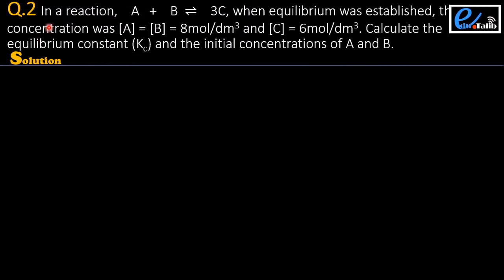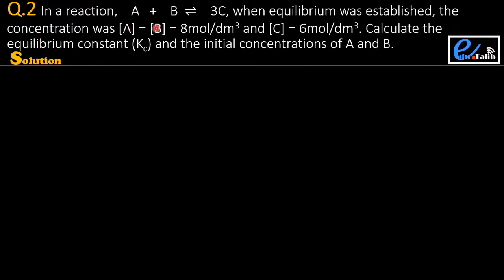Question number two: in a reaction A plus B giving 3C, when equilibrium was established, the concentration of A and B is equal to 8 moles per dm³ and C is 6 moles per dm³. We have to calculate the equilibrium constant Kc and the initial concentration of A and B.